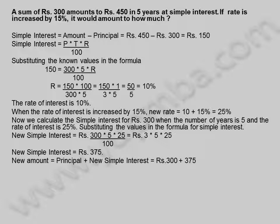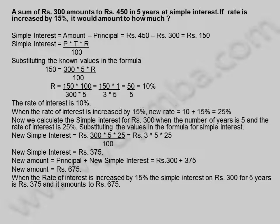New amount equals principal plus new simple interest, which is 300 plus 375 rupees. New amount equals 675 rupees. When the rate of interest is increased by 15%, the simple interest on 300 rupees for 5 years is 375 rupees and it amounts to 675 rupees.